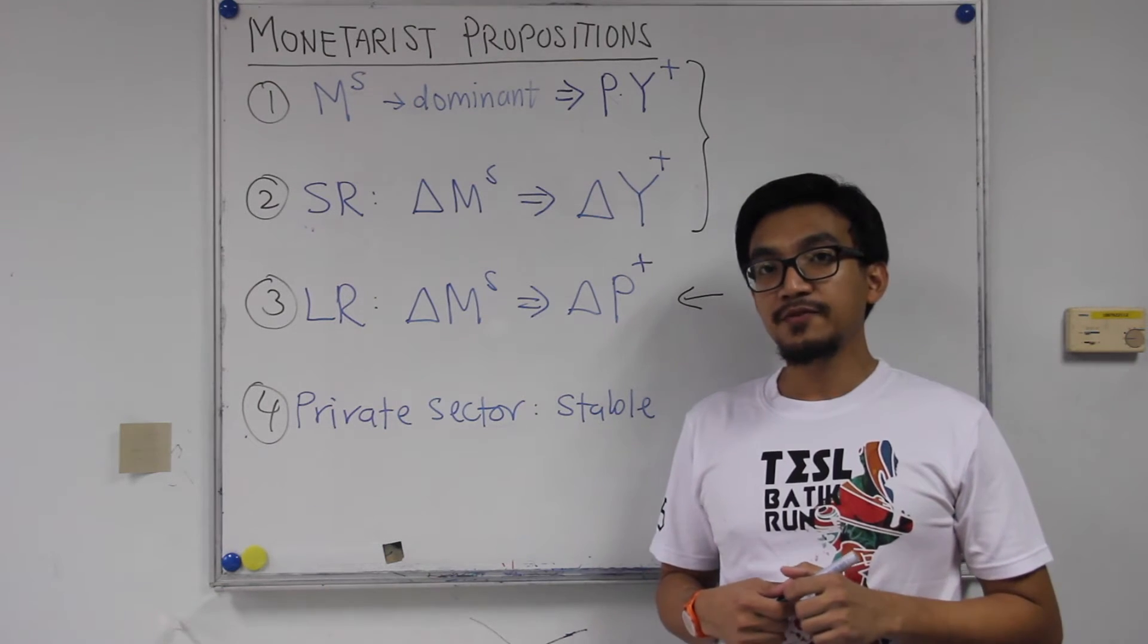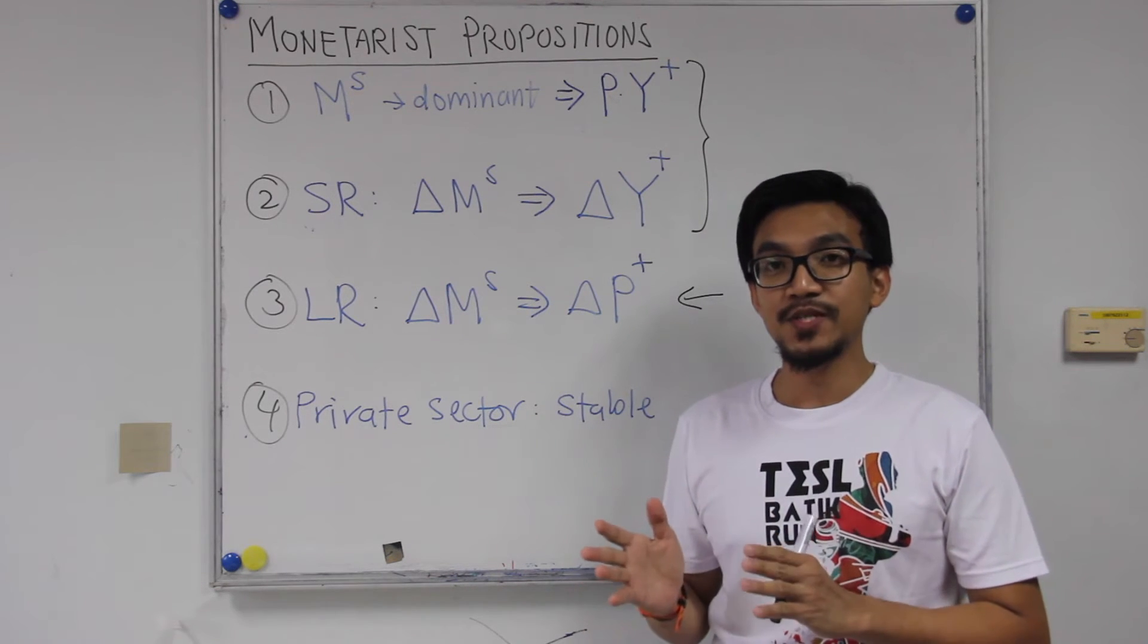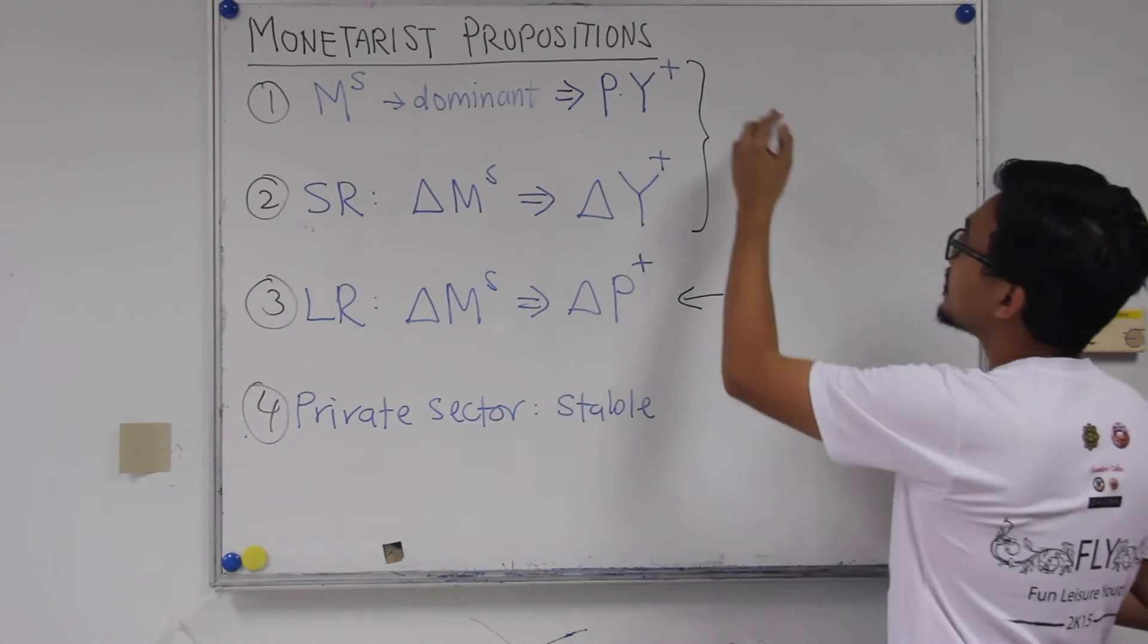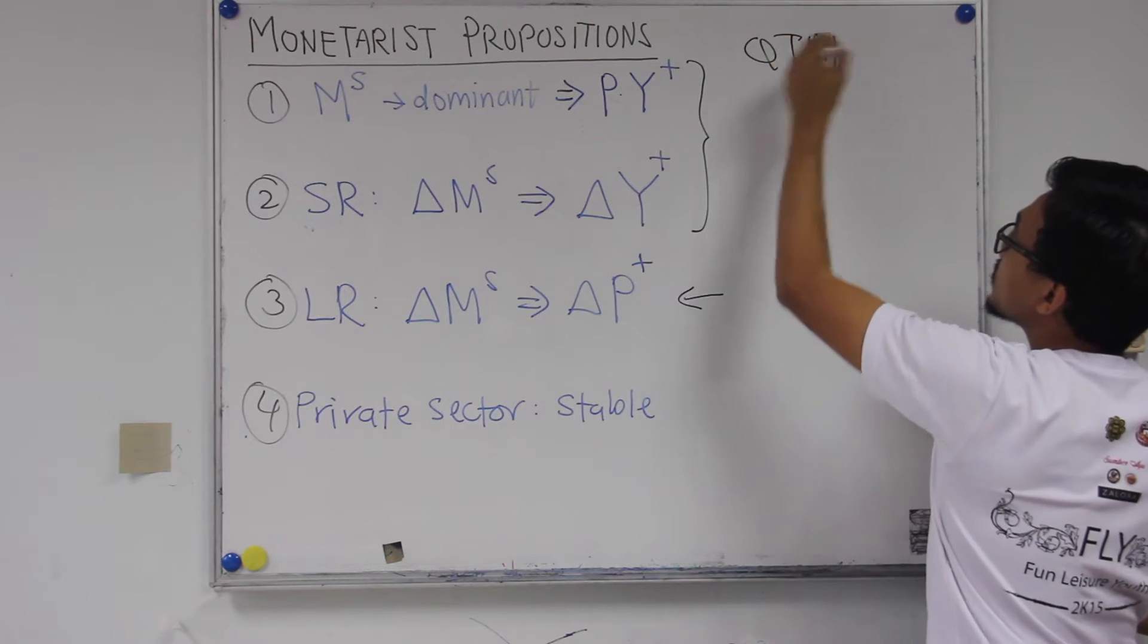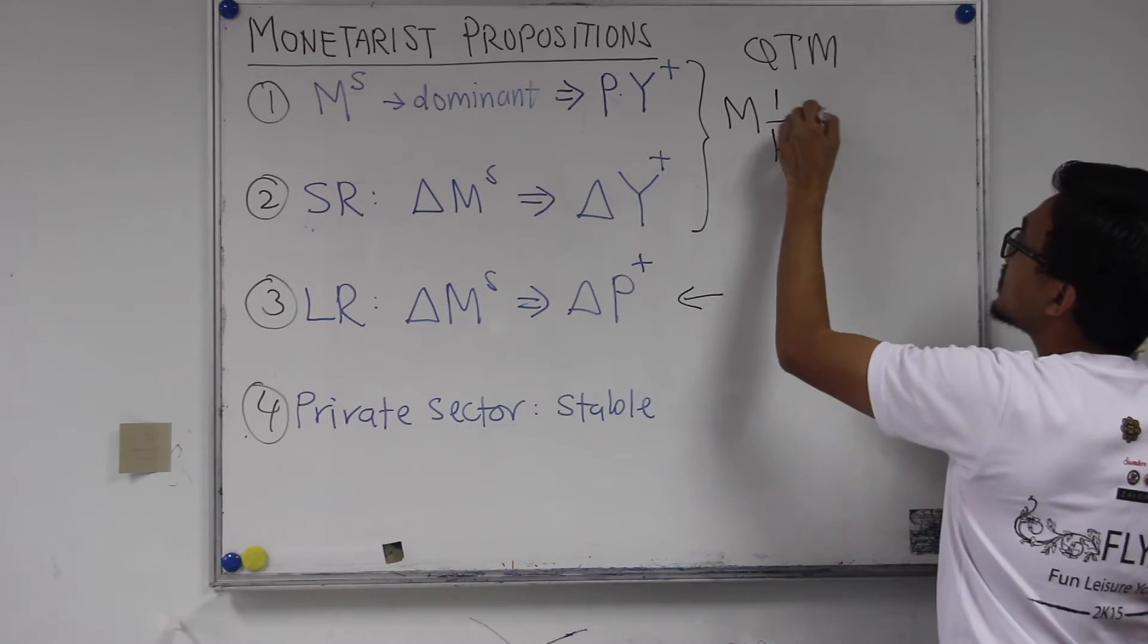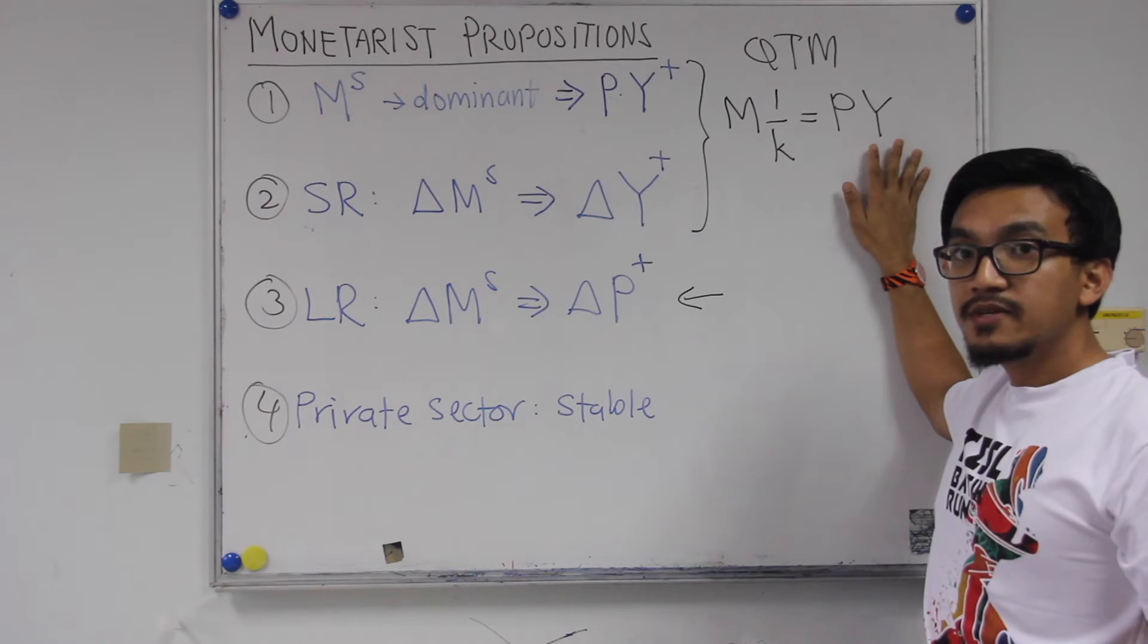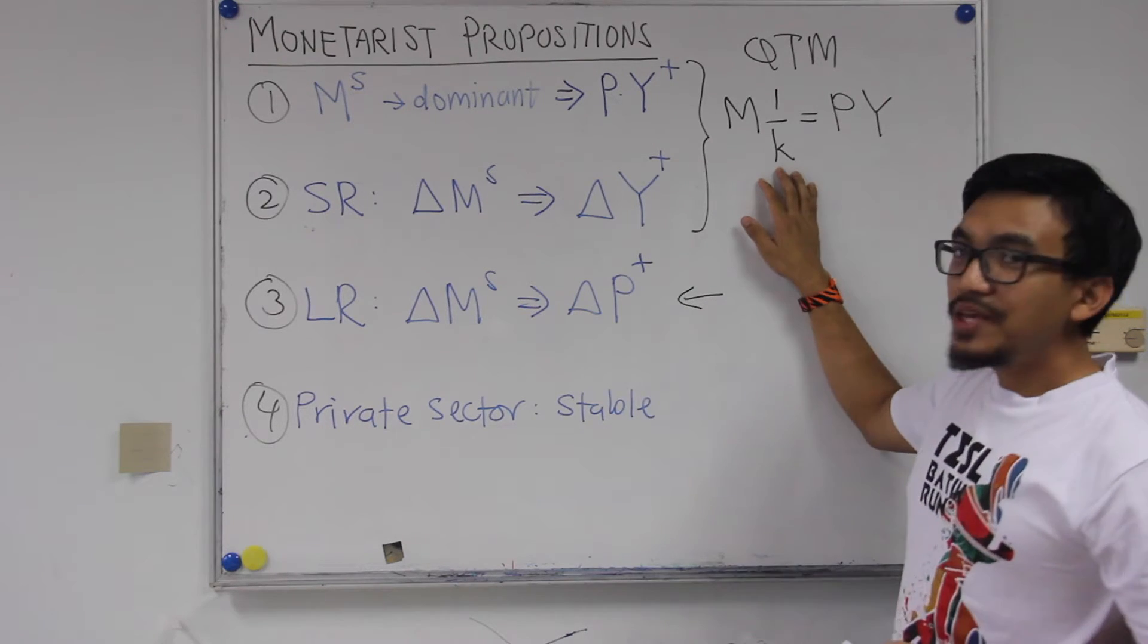To start our brief review of proposition number one and two, I would like to bring you back to the basic of the arguments between the monetarists and the Keynesian and previously with the classical. So they are basically the arguments will reduce to how did the impact of money on real variables from the QTM equation. So we know that from the QTM equation M multiplied with one over K is equals to PY.